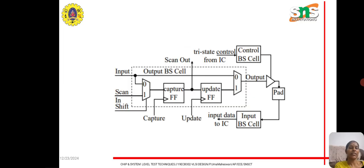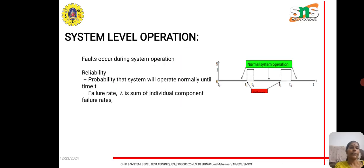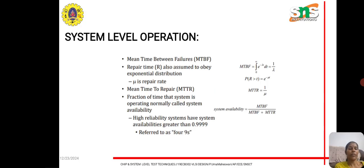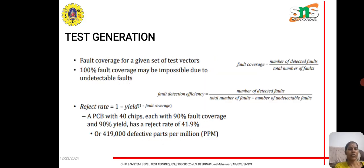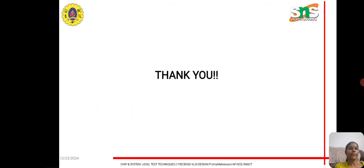The details of the testing process are shown in this slide. System-level operation includes faults occurring during system operation, reliability over time, failure rate, and the sum of individual component behaviors. Thank you.